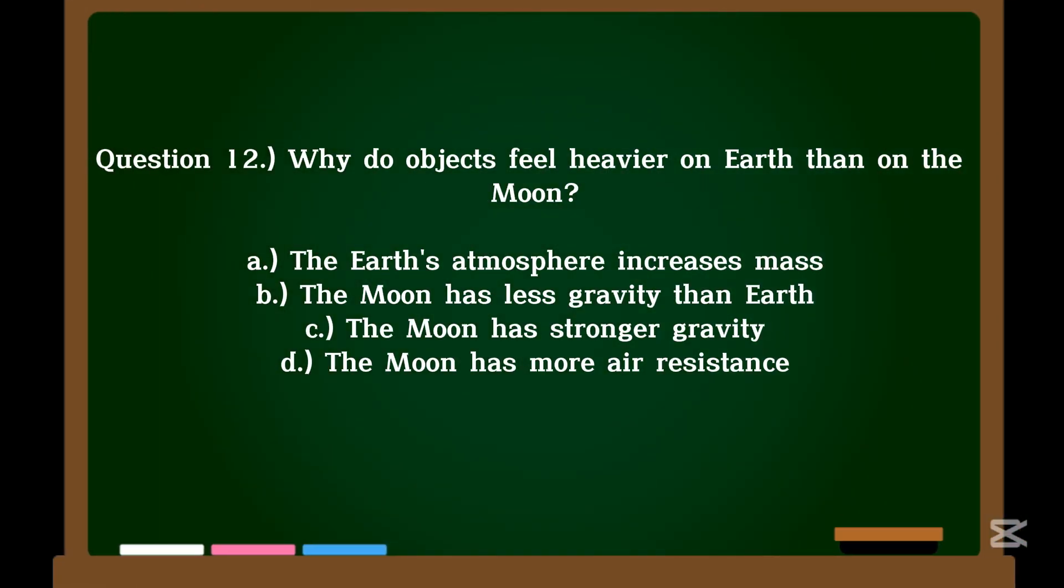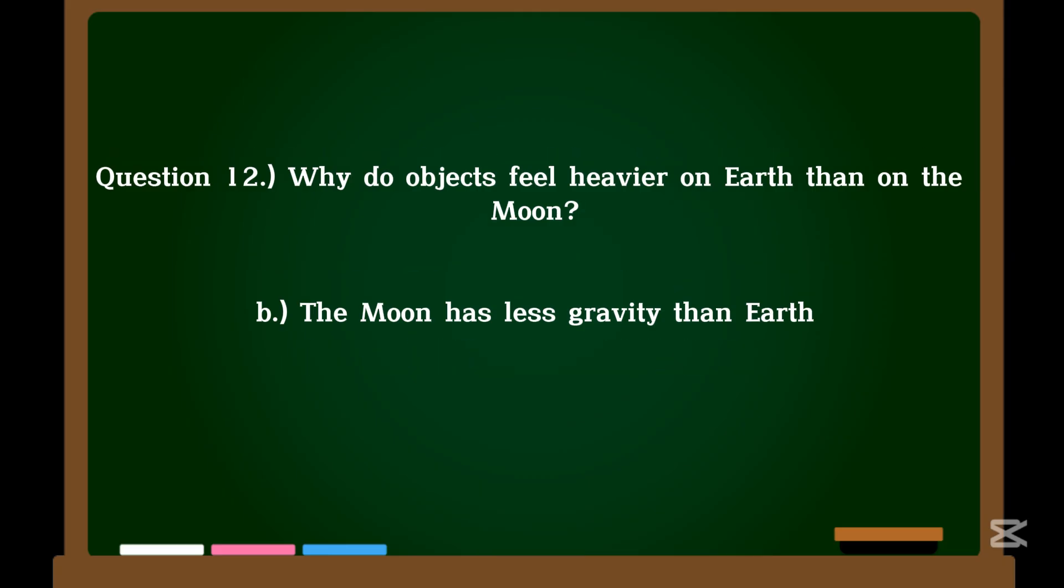Question 12. Why do objects feel heavier on Earth than on the Moon? A. The Earth's atmosphere increases mass. B. The Moon has less gravity than Earth. C. The Moon has stronger gravity. D. The Moon has more air resistance. Correct answer: B. The Moon has less gravity than Earth.